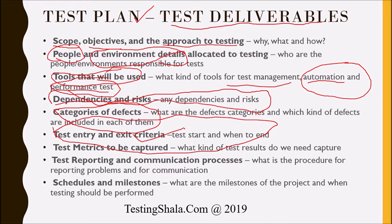Similarly, for integration testing, system testing, and acceptance testing, we are going to have entry and exit criteria for all four levels of testing. We clearly document what our entry and exit criteria are, and get it reviewed by all stakeholders. If there are any changes, they will be discussed and updated accordingly in the test plan as agreed with all stakeholders.